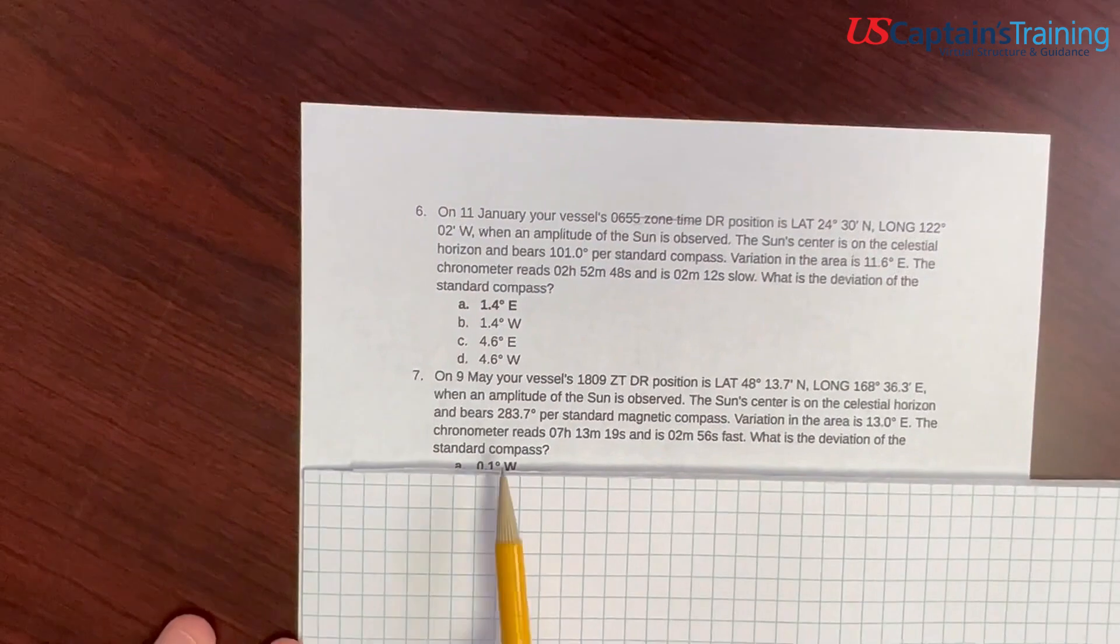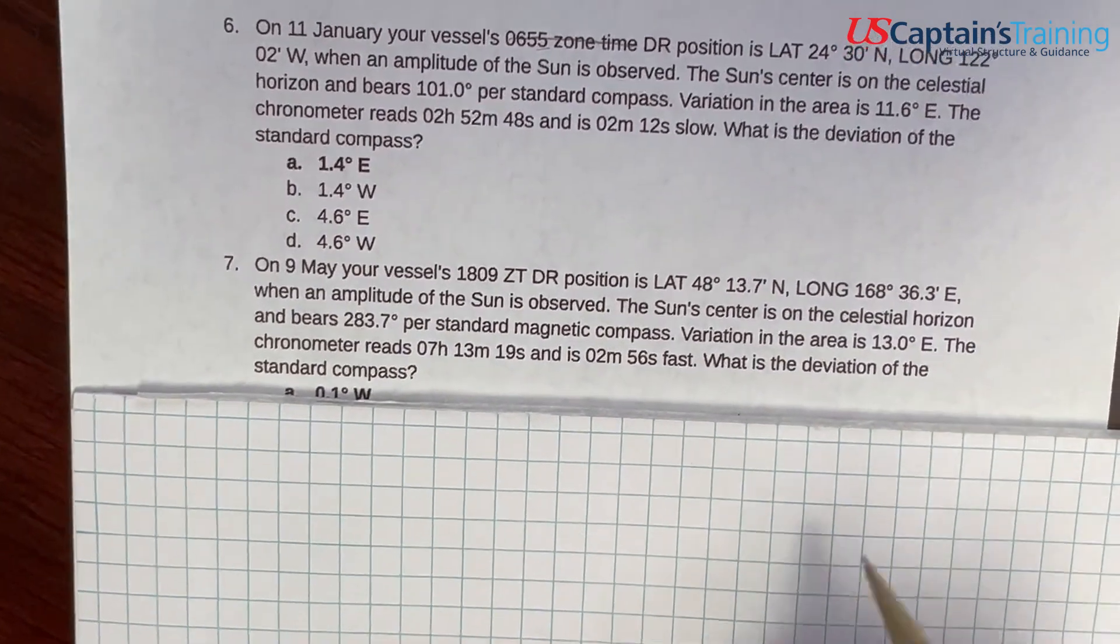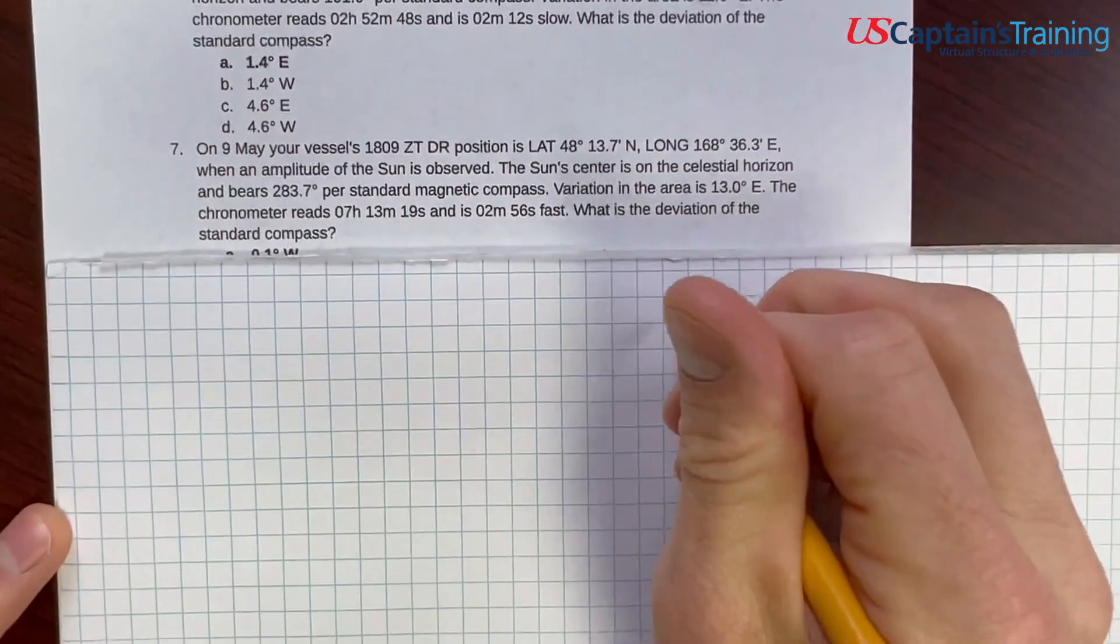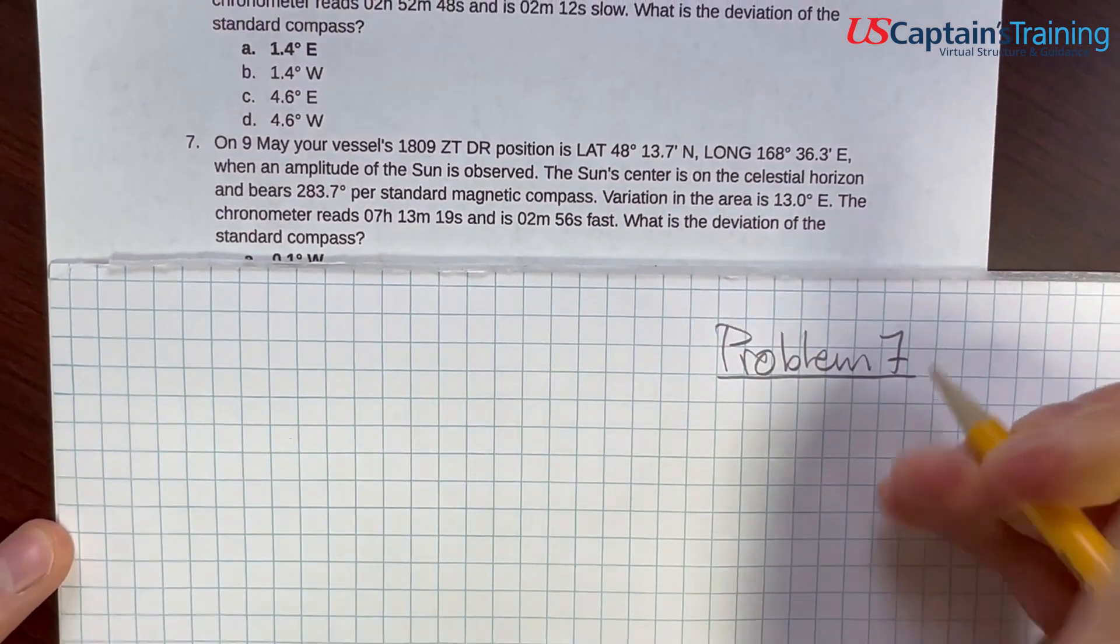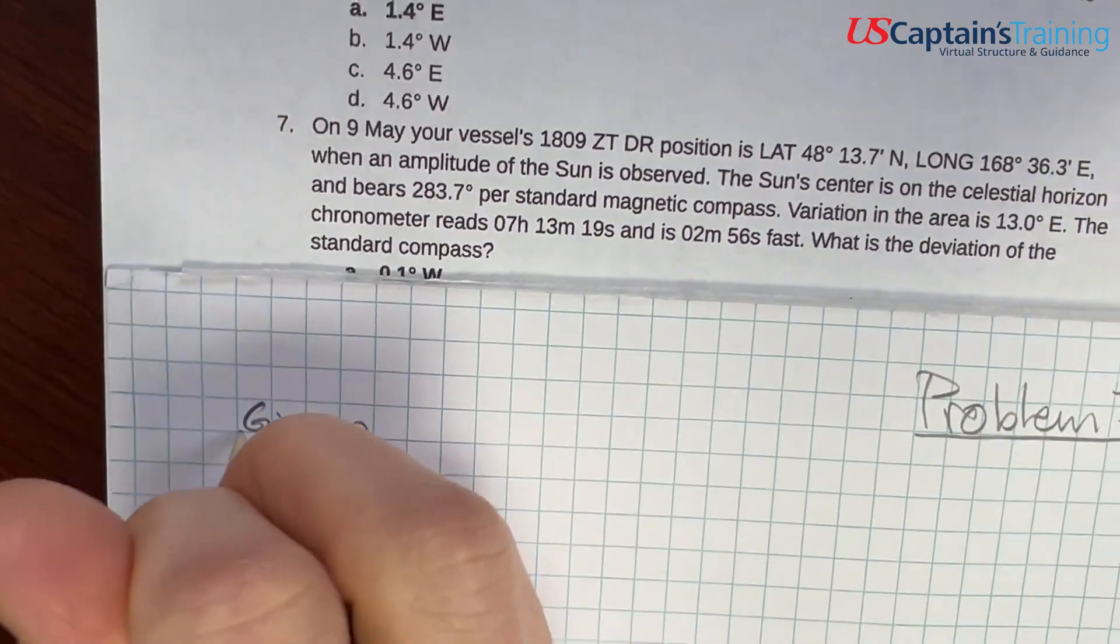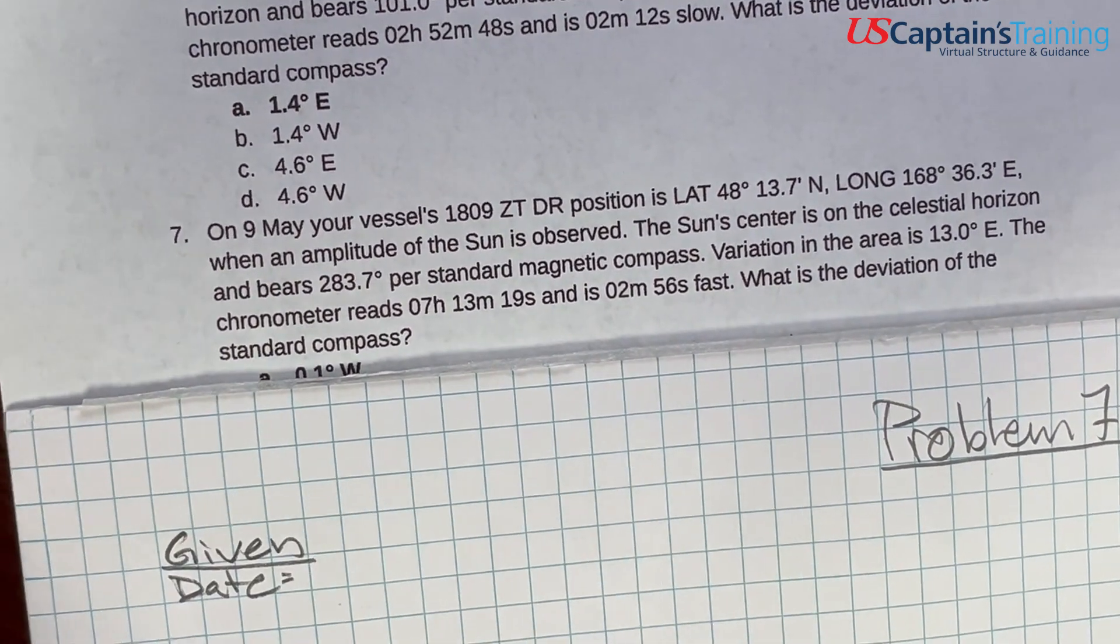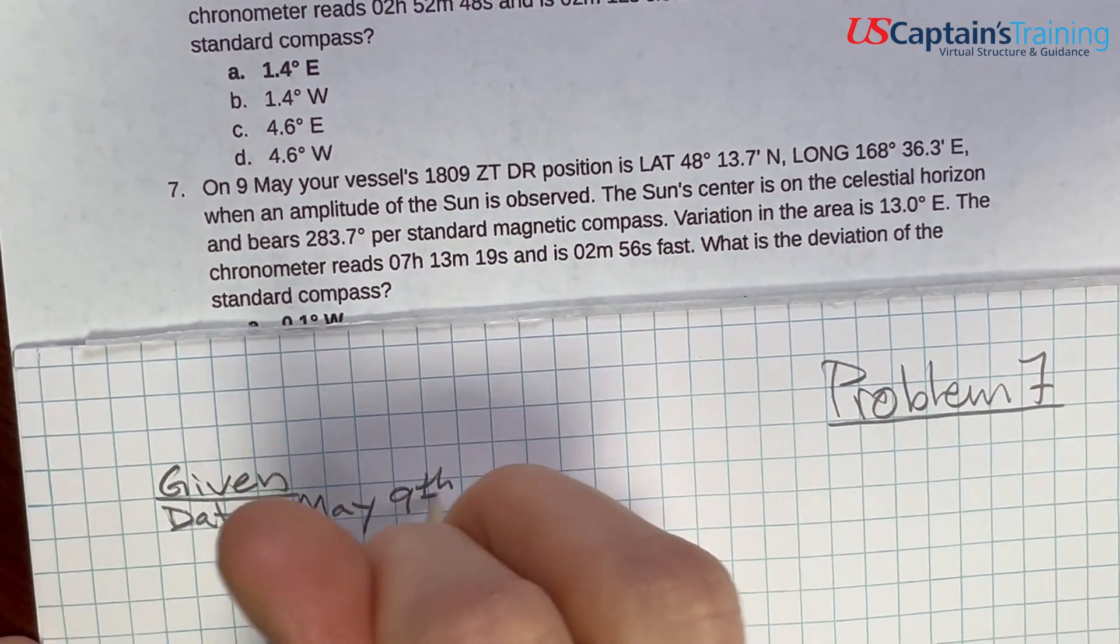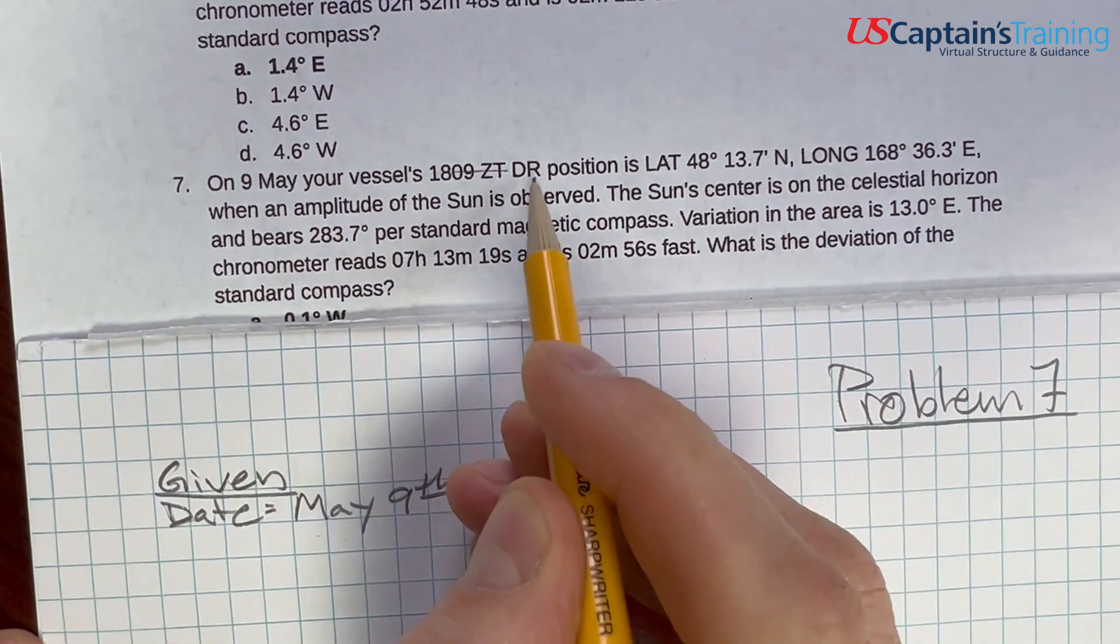All right, practice problem 7. This is calculating compass deviation using amplitude of the sun method while it's on the celestial horizon. So, jot this down. Problem 7. And in each of these problems, they give some information. So what is given in the problem?